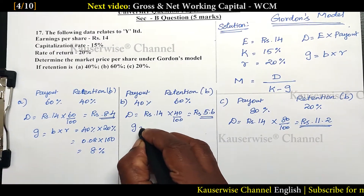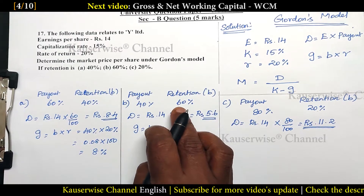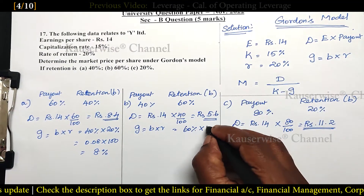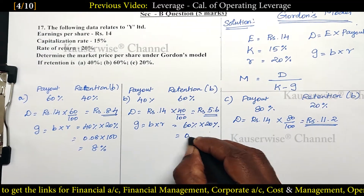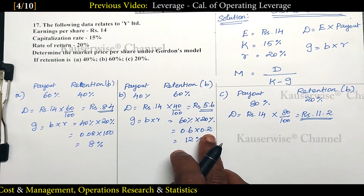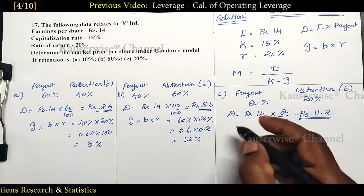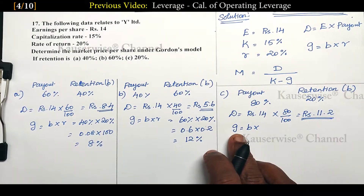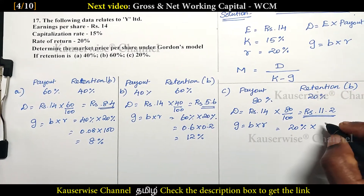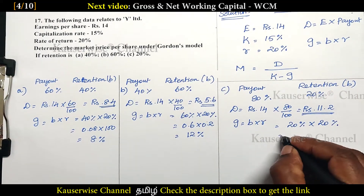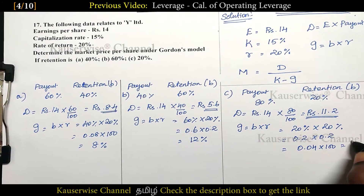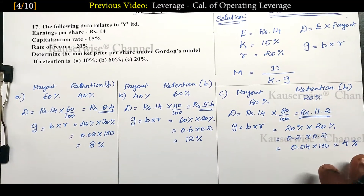For Case 3: G = B × R = 20% × 20% = 0.04 × 100 = 4%. So the growth rates are: Case 1 = 8%, Case 2 = 12%, Case 3 = 4%. K is given as 15% for all cases.